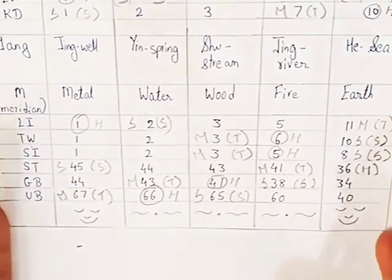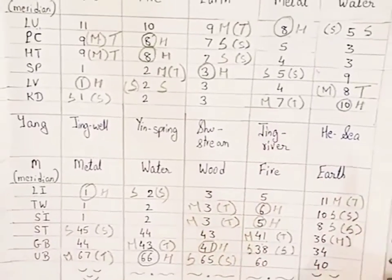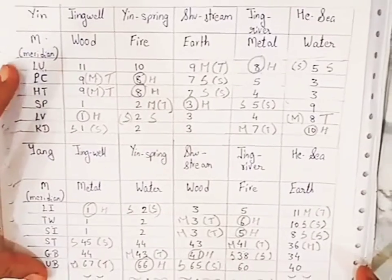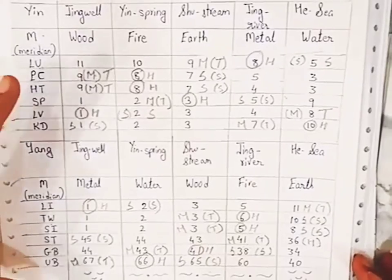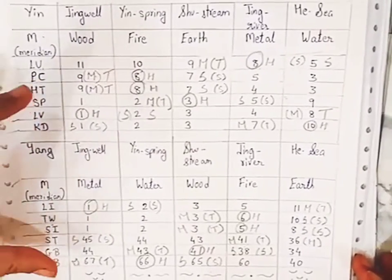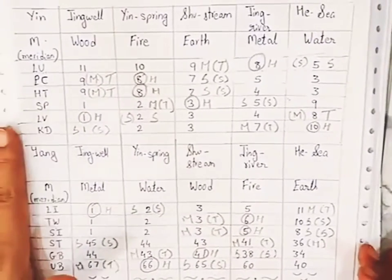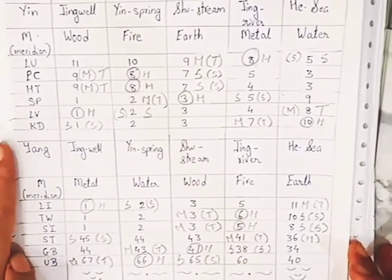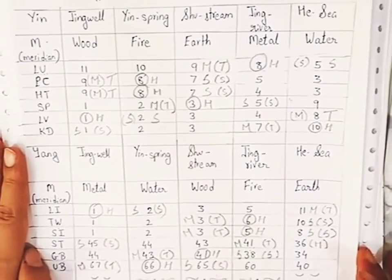Once you have this chart of five-shu points, you can get the horary point, the mother point, and the sedation point. I have already discussed the trick, so those who have not seen the earlier video on how to make this chart easily, kindly go through that video first and then come back to this one. This will be helpful for all those giving examinations or learning acupuncture. Thank you so much for watching my videos — I'll come again with the next video.